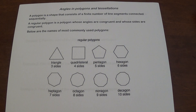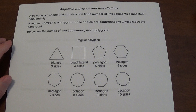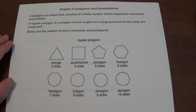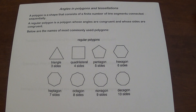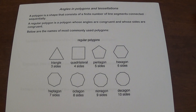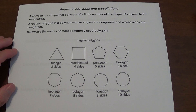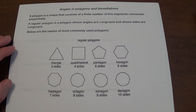We're going to talk about angles and polygons and also discuss tessellations. A polygon is a shape that contains a finite number of line segments that you connect. A regular polygon is a polygon whose angles are congruent and whose sides are congruent, which means they have the same angle measures and the same length sides.